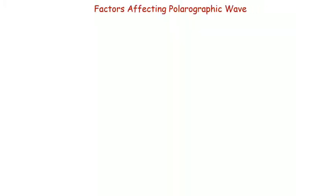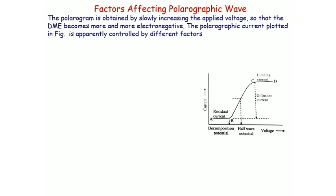The factors affecting the polarographic wave are discussed by looking at the diagram. The polarograph is obtained by slowly increasing the applied voltage so that the DME becomes more and more electronegative. The polarographic current plotted in the figure is apparently controlled by different factors, the first one being the residual current.